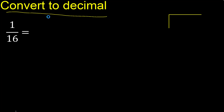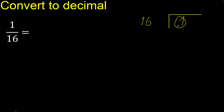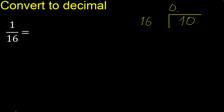1 divided by 16. 1 is less than 16, therefore complete with 0 here. 0 point. 10 is less, therefore complete with 0.